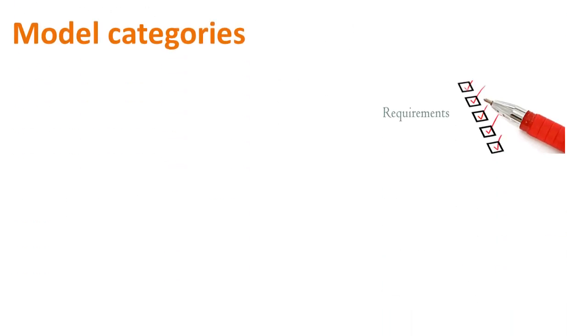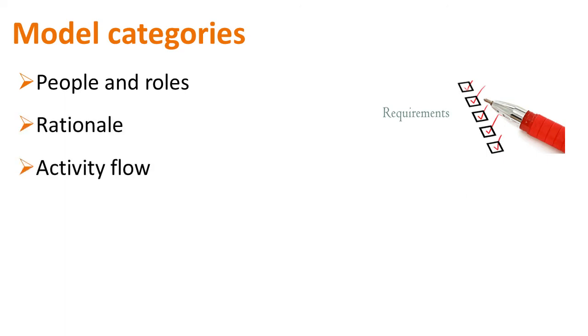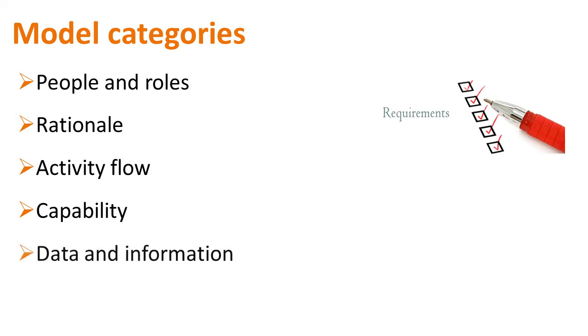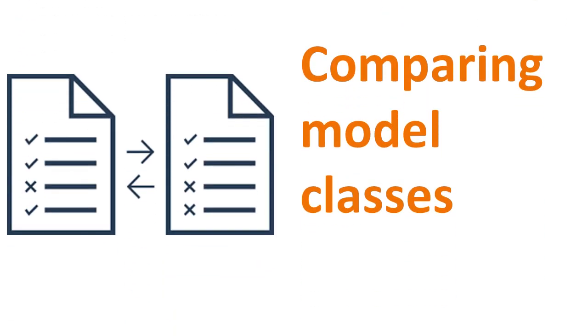Model categories typically include people and roles, rationale, activity flow, capability, data and information, etc. There are multiple types of model classes that we encounter in business analysis. Let us study each of them.